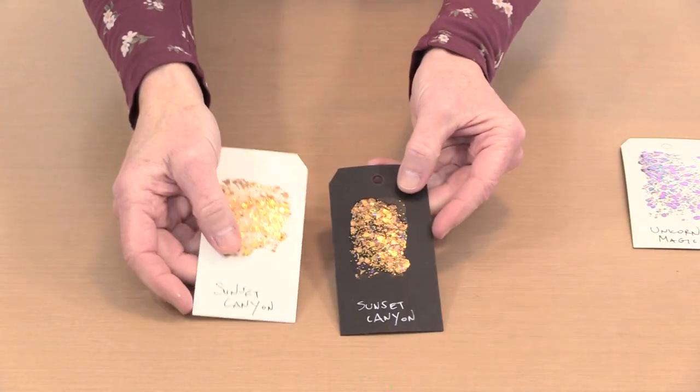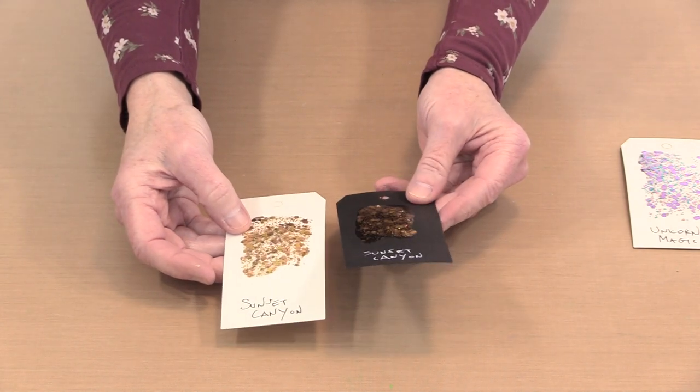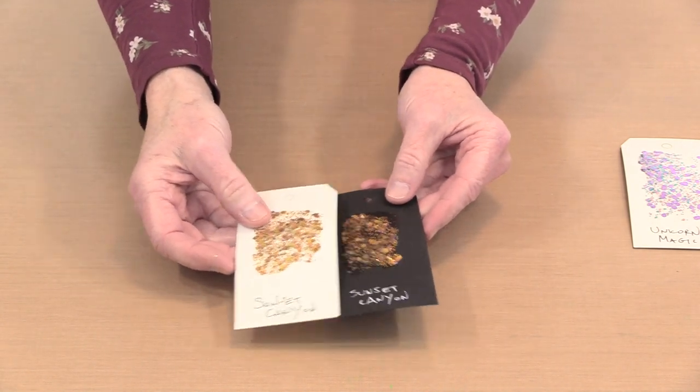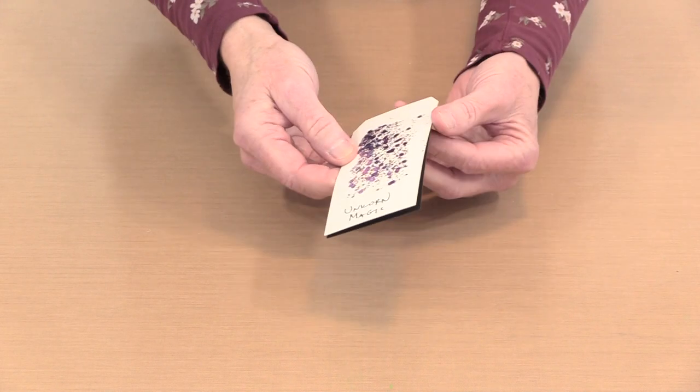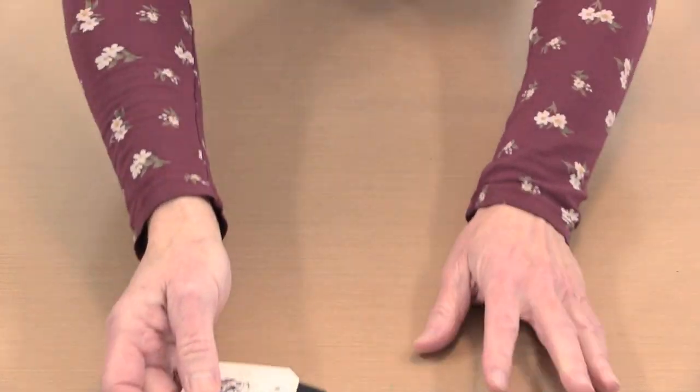Now we have Sunset Canyon. So this is a little more amber than the gold, and it's got some flecks of other colors in there. And then the last one is appropriately named Unicorn Magic, which I think is really pretty.